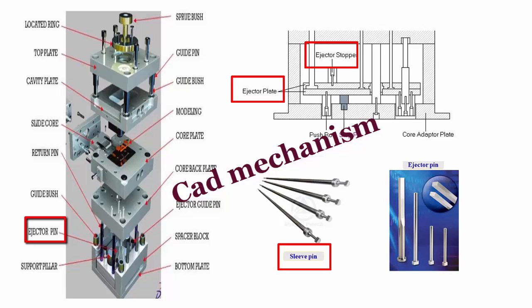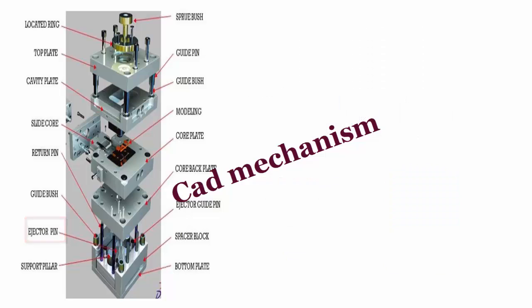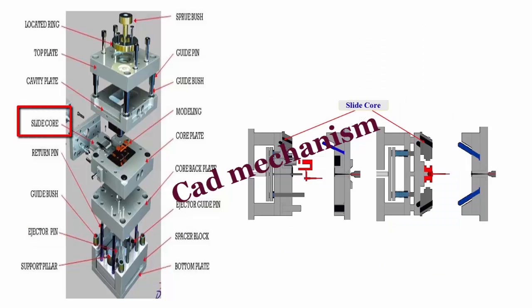Stop pin. Ejector pin: pushes the product out of the mold. Slide core: can be used to make undercuts of products.